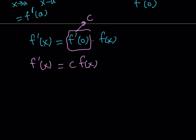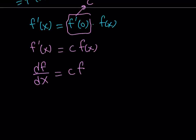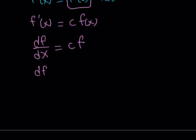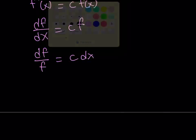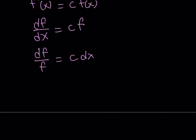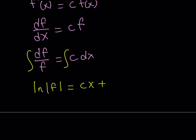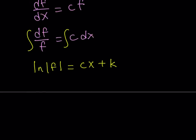I'm going to write f prime of x as df over dx, and f of x simply as f, where c is a constant. Separating the variables gives us df over f equals c dx. If you integrate both sides — since we don't know if f is positive or negative, we write it with absolute value — the integral of 1 over f is the natural log of the absolute value of f, and the right-hand side integrates to cx plus a constant k.